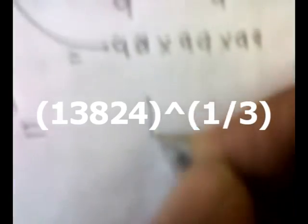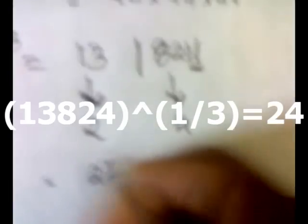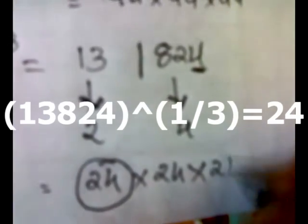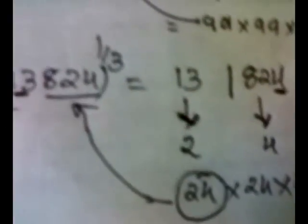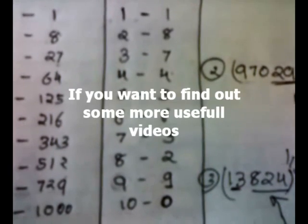Another example: the cube root of 13,824. We divide it into two parts — the right-hand side is 824 and the left-hand side is 13. From table number one, 13 lies between 8 and 27, so between 2 and 3. We take the minimum: 2. The units digit on the right is 4, and from table number two, 4 corresponds to 4. So our answer is 24. Multiply 24 by 24 by 24 to verify.